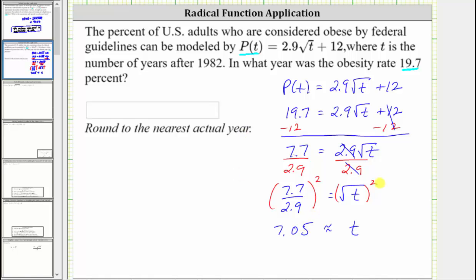But we are asked to give the answer to the nearest year, and we can see this will round to seven. Therefore, to find the actual year—because t is the number of years after 1982—we take 1982 and add t to determine the year. Because we are using seven as the rounded value for t, we have 1982 + 7 = 1989. So 1989 is the approximate year in which the obesity rate was 19.7%.